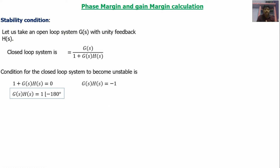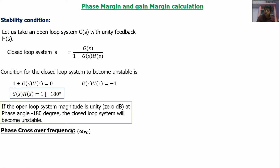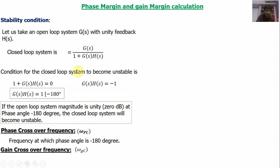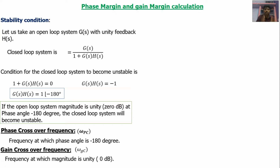From the stability criteria we can define phase margin and gain margin. Phase crossover frequency is defined as the frequency at which the phase angle is minus 180 degrees. Gain crossover frequency is defined as the frequency at which the gain is unity. These two parameters are defined using the stability condition.